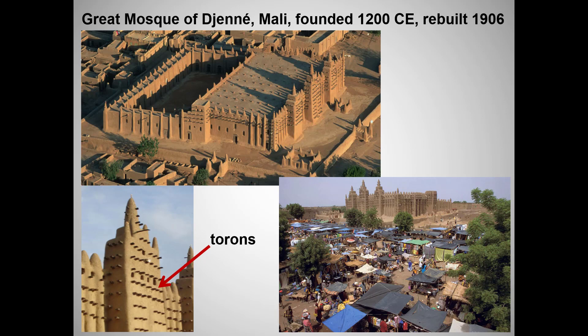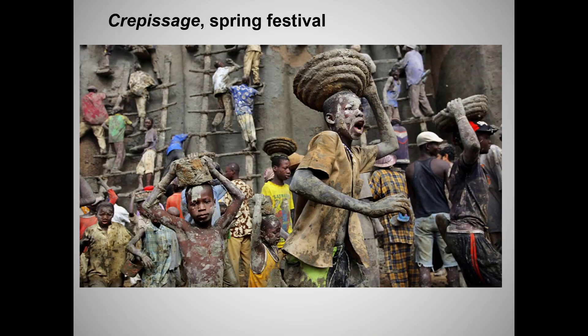What point is the College Board making with the second required image? Islam is very much a communal religion — the mosque is the center of community interaction, it houses a school, and a market has grown up around it. What I find most fascinating: Djenné is located on a river plain that experiences monsoon rain, so every spring the mosque needs to be re-plastered. The entire community comes together at the annual festival of the Crépissage, with music, dance, and serious eating apparently involved.